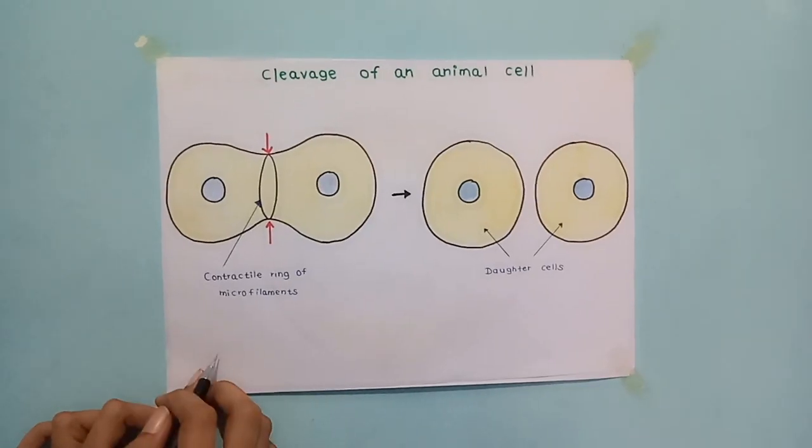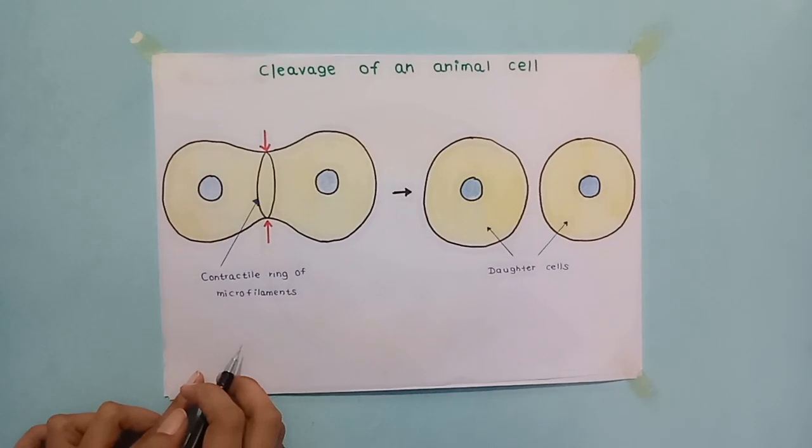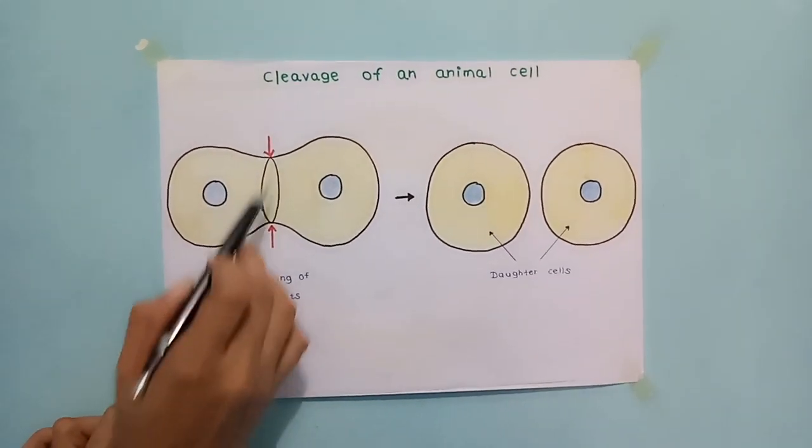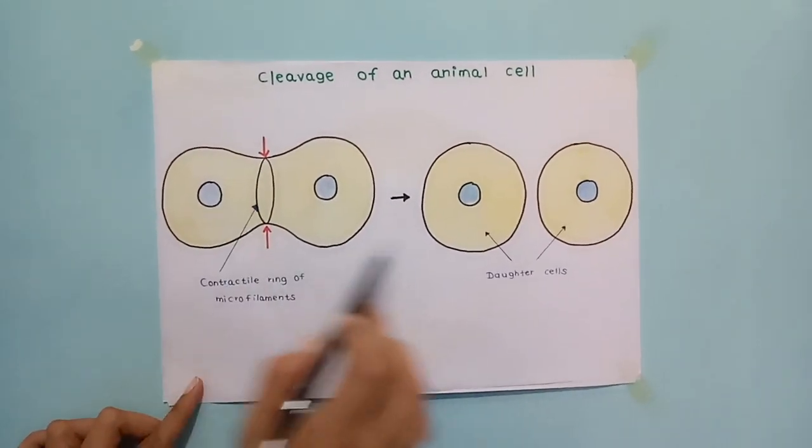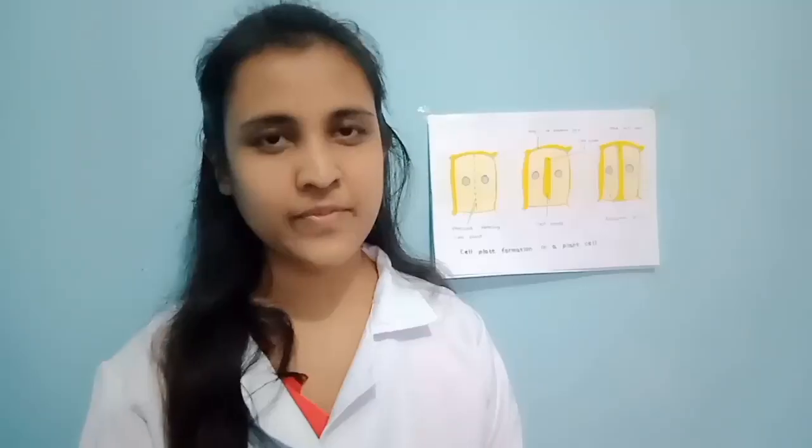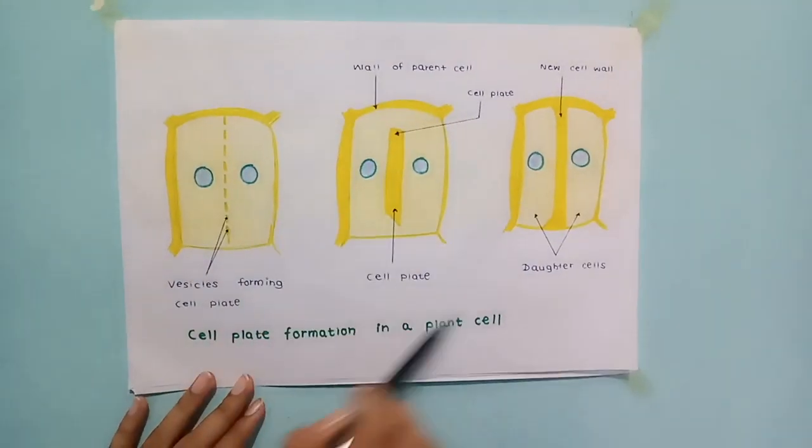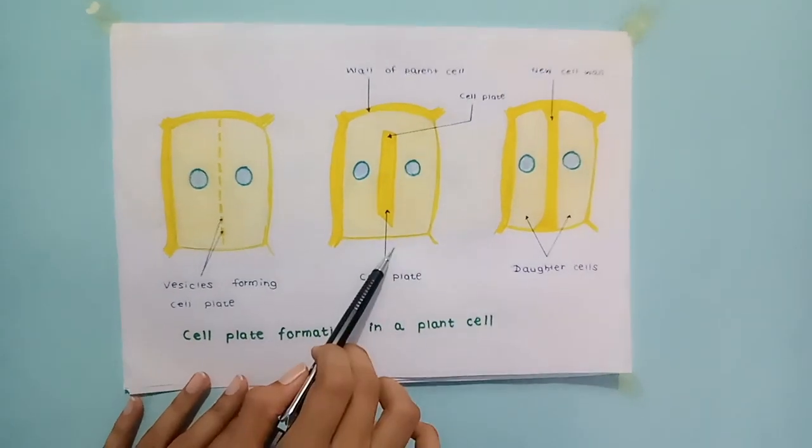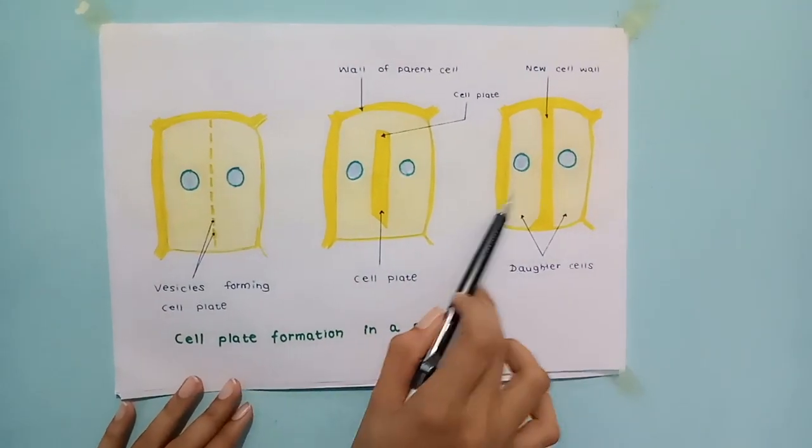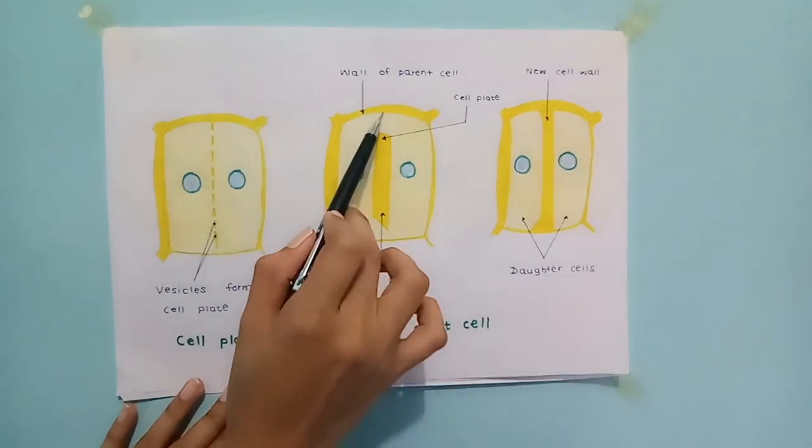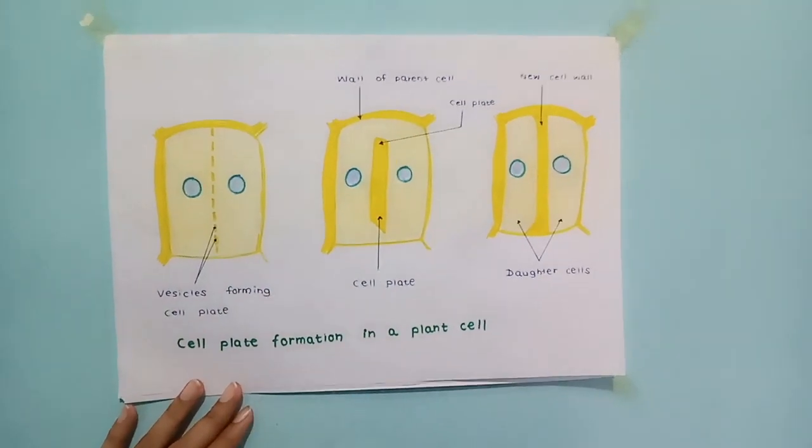In animal cells, cytokinesis involves the formation of a cleavage furrow which pinches the cell in two. Cytokinesis in plant cells is markedly different. There is no cleavage furrow. Plant cells produce the cell plate which divides the cytoplasm in two, growing towards the perimeter of the parent cell.